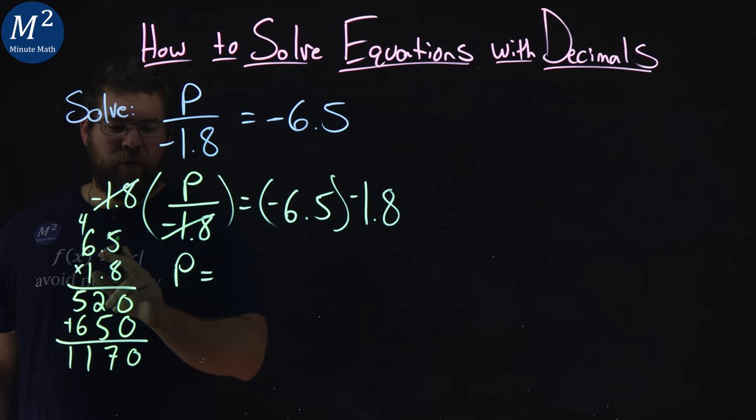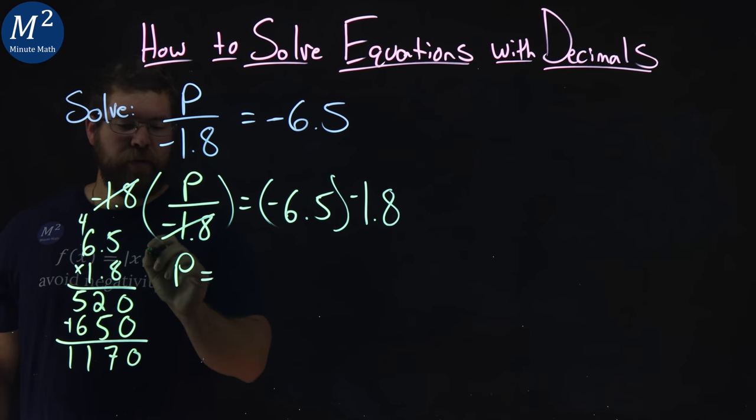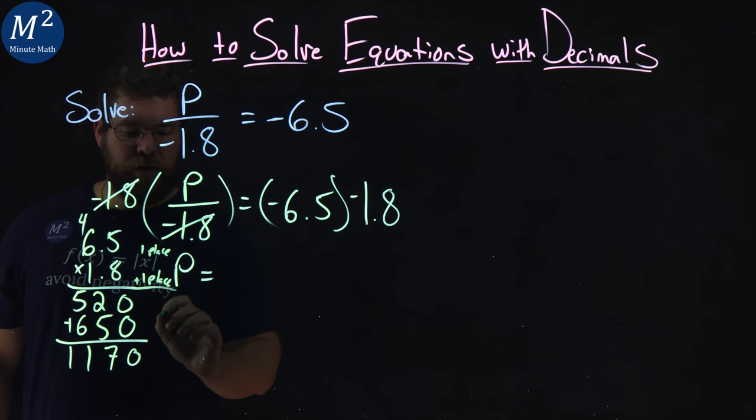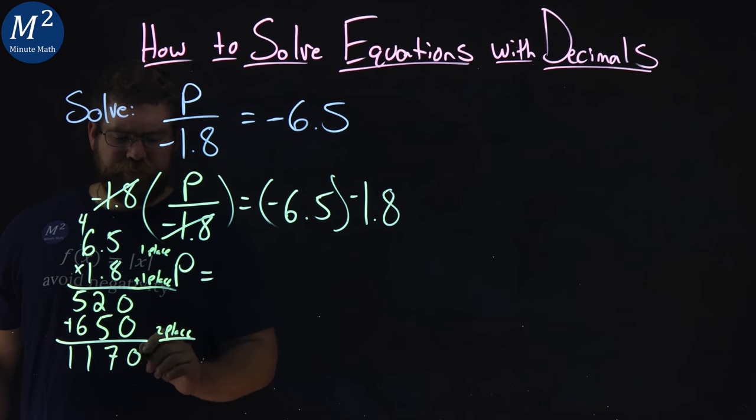Look at our decimal places. We have one decimal place here and one. So one place, if you can write it, one place. Meaning, when we add them together, we should have two places. Two decimal places we need. So we can start here and move over two. One, two. 11.7.